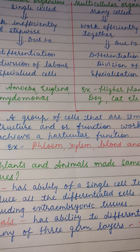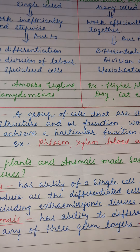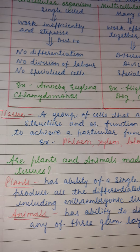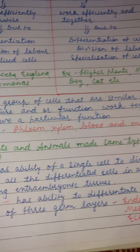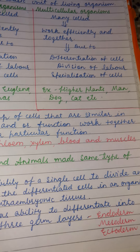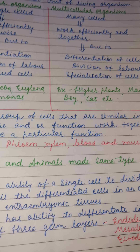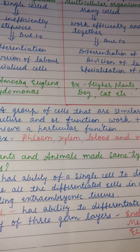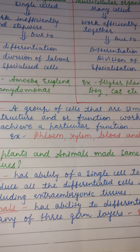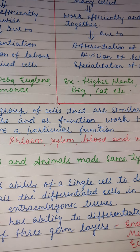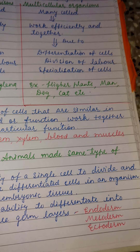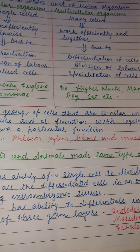Examples of unicellular organisms include amoeba, euglena, and chlamydomonas, while multicellular organisms include higher plants, humans, animals, and others. Examples of tissue are phloem, xylem, blood, and muscle tissue.